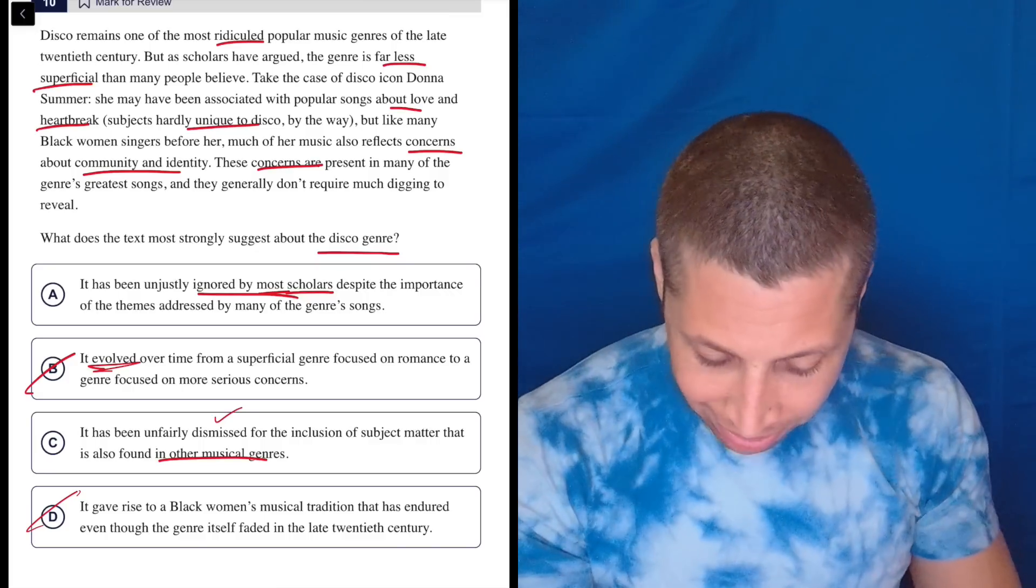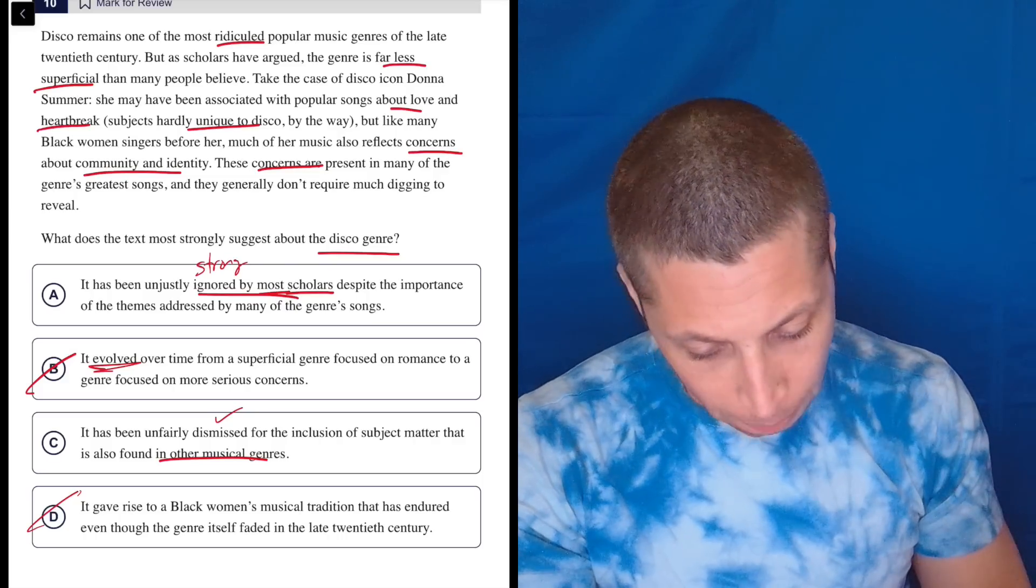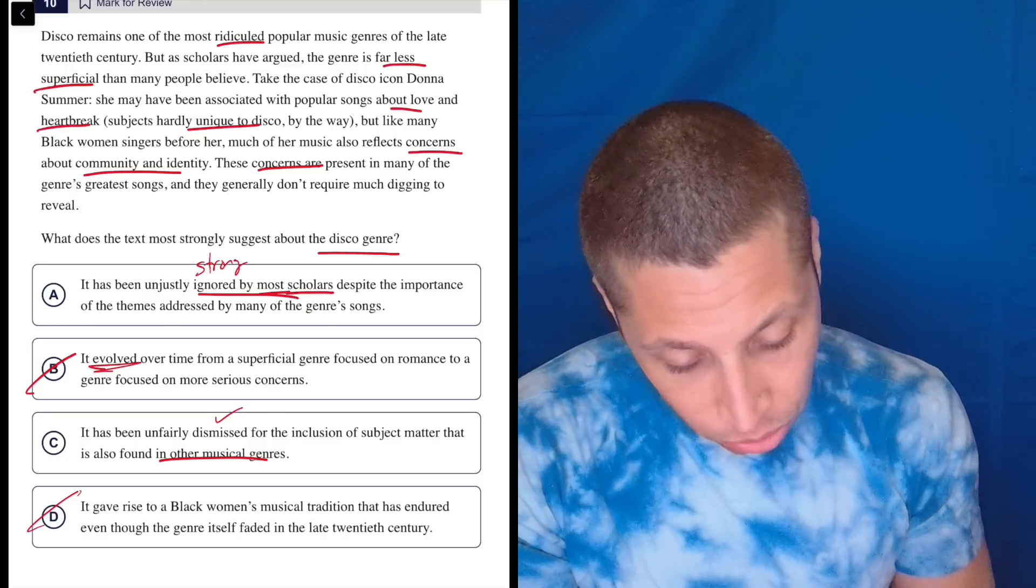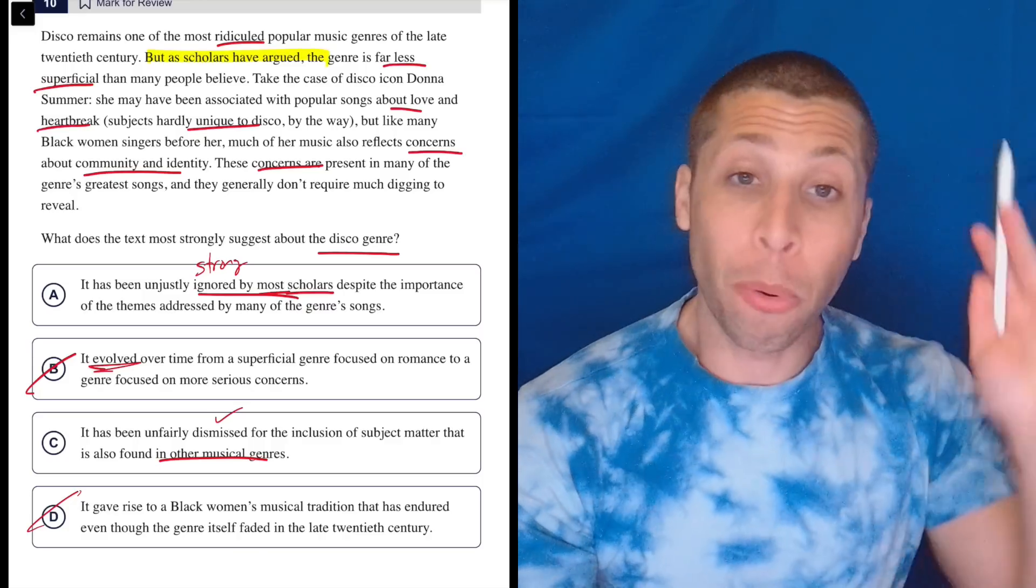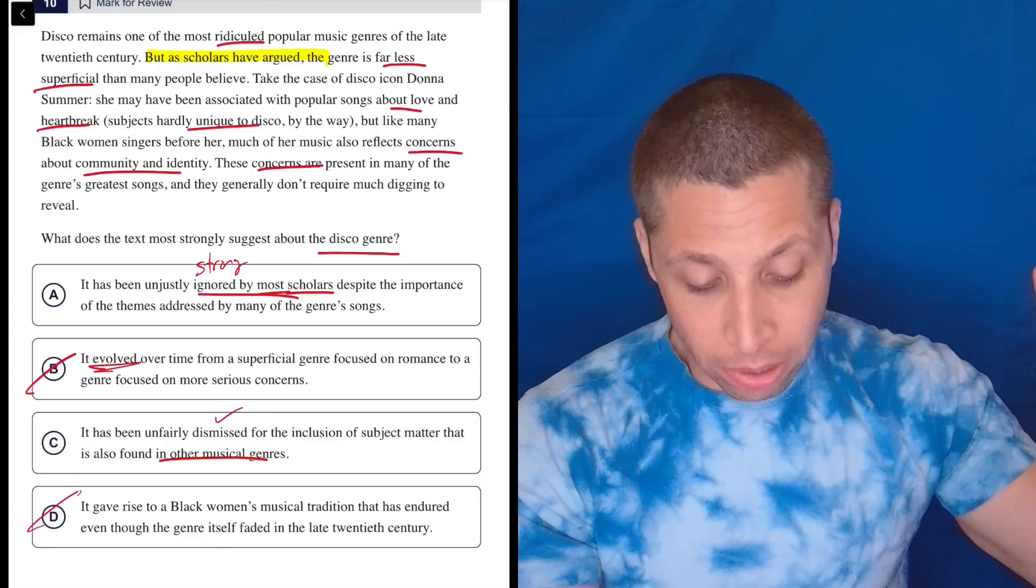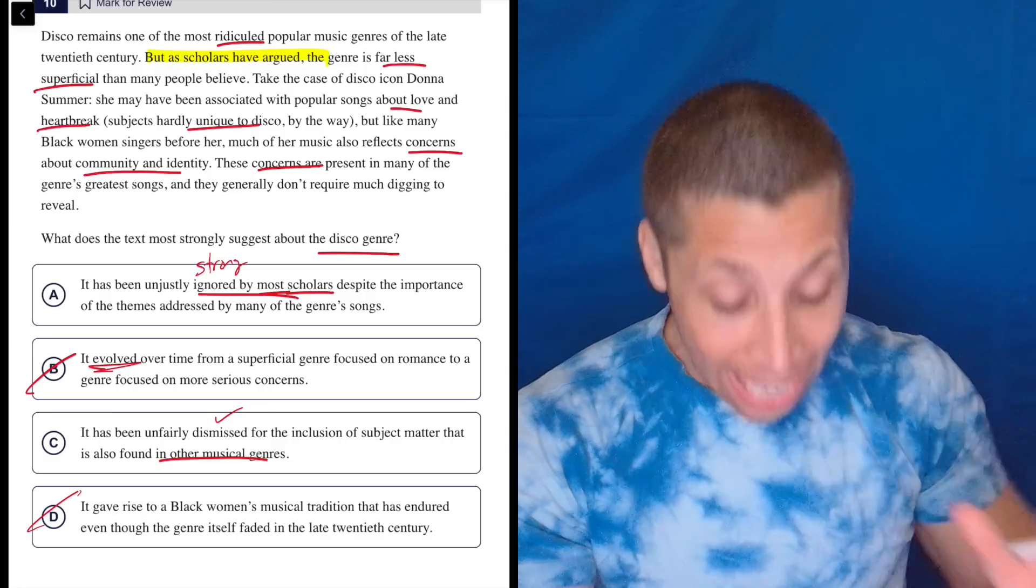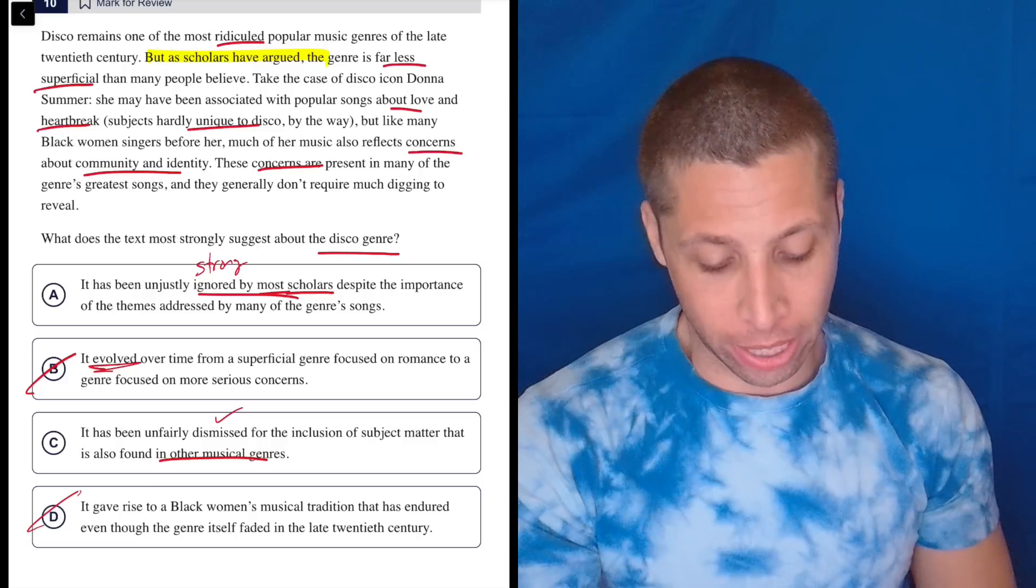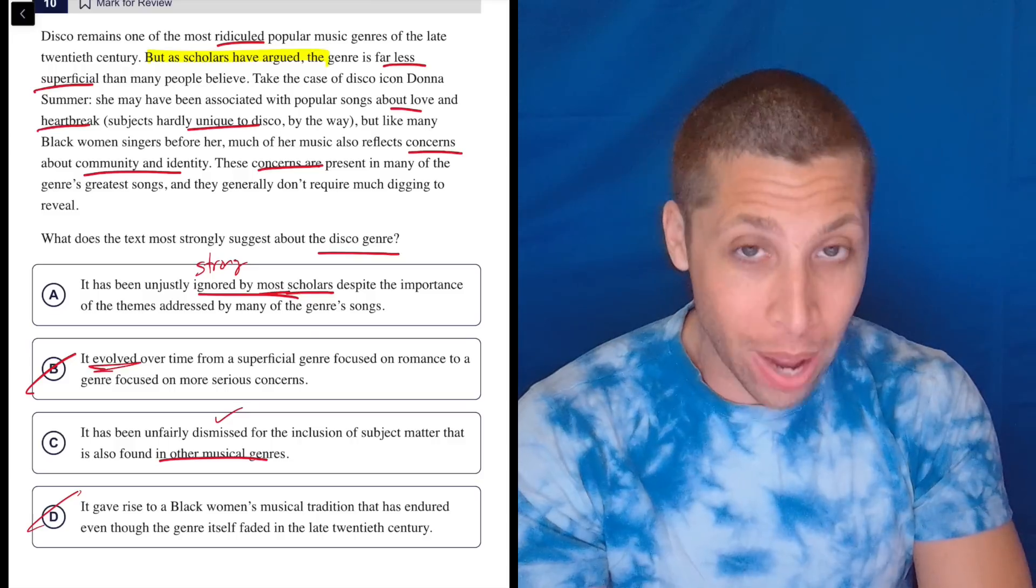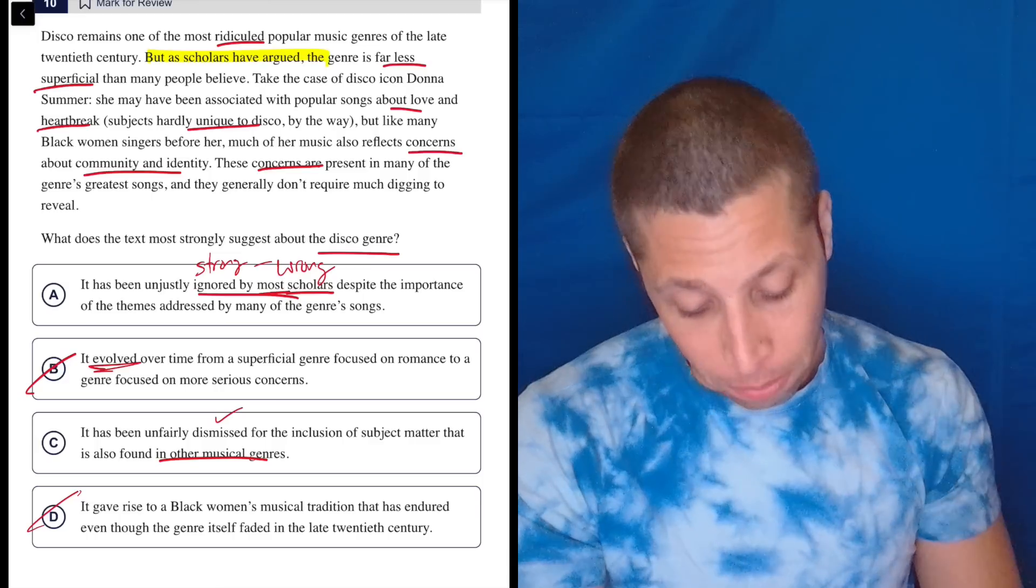Okay, let's look at A again. Again, it's not ignored, that's so strong. They're ridiculing it, but as scholars have argued, in fact, here we go. It's not ignored by most scholars. Ooh, see? This is important. Most important word in a passage is but, right there at the top. But, as scholars have argued, the genre is far less superficial, so other people might be ignoring it, but the scholars are not ignoring it. The scholars are the ones saying, hey, it's really good. You should listen to it in a different way. So this is just wrong. I didn't even notice that before. So yeah, there it is.